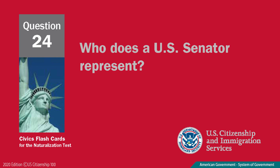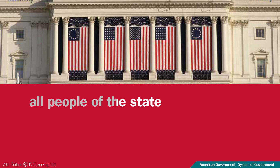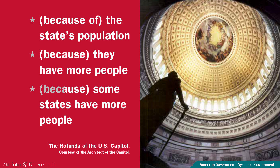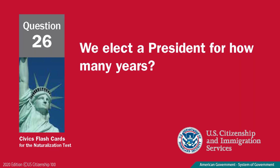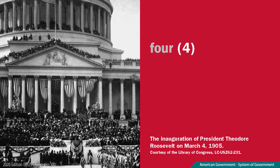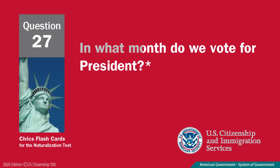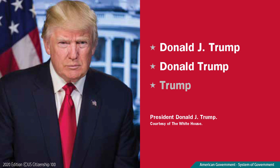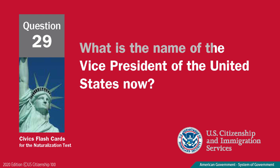Who does a U.S. Senator represent? All people of the state. Why do some states have more representatives than other states? Because some states have more people. We elect a president for how many years? Four. In what month do we vote for president? November. What is the name of the president of the United States now? Trump. What is the name of the vice president of the United States now? Pence.